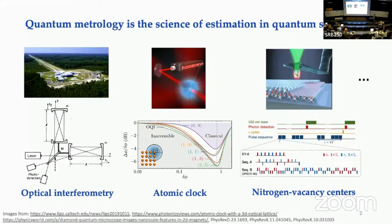Finally, you can use, for example, nitrogen-vacancy centers as qubits to detect magnetic fields or electric fields, which can be unknown in the quantum system. This is also an example of quantum metrology. I'm not going to talk about any specific experimental platform.